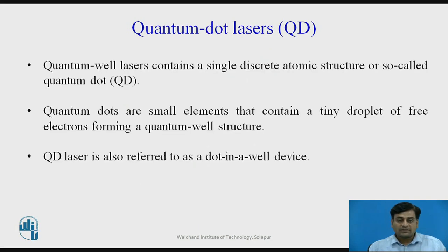The last type of laser structure is quantum dot lasers. More recently, quantum well lasers have been developed in which the device contains a single discrete atomic structure or so-called quantum dot. Quantum dots are small elements that contain a tiny droplet of free electrons forming a quantum well structure. Hence, a quantum dot laser is also referred as a dot in a well device.